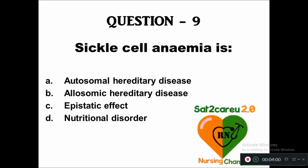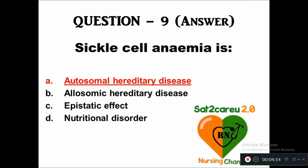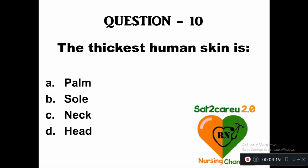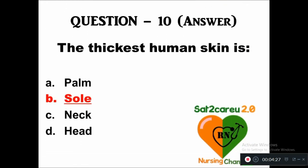Question 9: Sickle cell anemia is — option A: autosomal hereditary disease, B: allosomic hereditary disease, C: epistatic effect, D: nutritional disorder. Sickle cell anemia is an autosomal hereditary disease. Question 10: The thickest human skin is found at — A: palm, B: sole, C: neck, D: head. The right answer is sole — it is the thickest human skin.